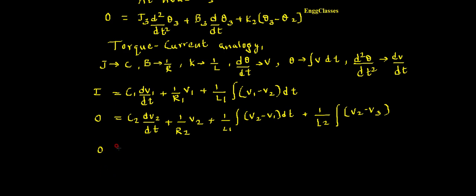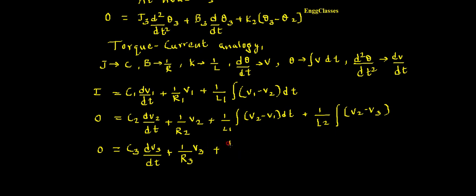At node theta3 using torque-current analogy: 0 = c3 · (dv3/dt) + (1/r3) · v3 + (1/l2) · ∫(v3 − v2) dt. These are the three performance equations using torque-current analogy.